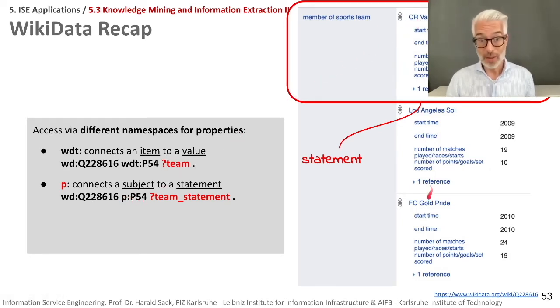So the P namespace, and you connect here Marta with P namespace and then property 54 which is team member. You get all of the statements you have here back and then you can put them in another variable which is called here the variable team statement.